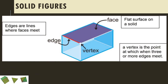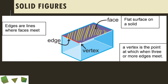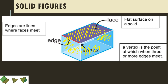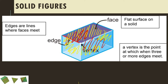Solid figures have three parts: the face, the edge, and the vertex. The face is the flat surface of a solid. For this cuboid, let's count the faces: one on top, one on the bottom, one on the left side, one on the right side, one on the front, and one on the back — that's 2, 4, 6. A cuboid has 6 faces.